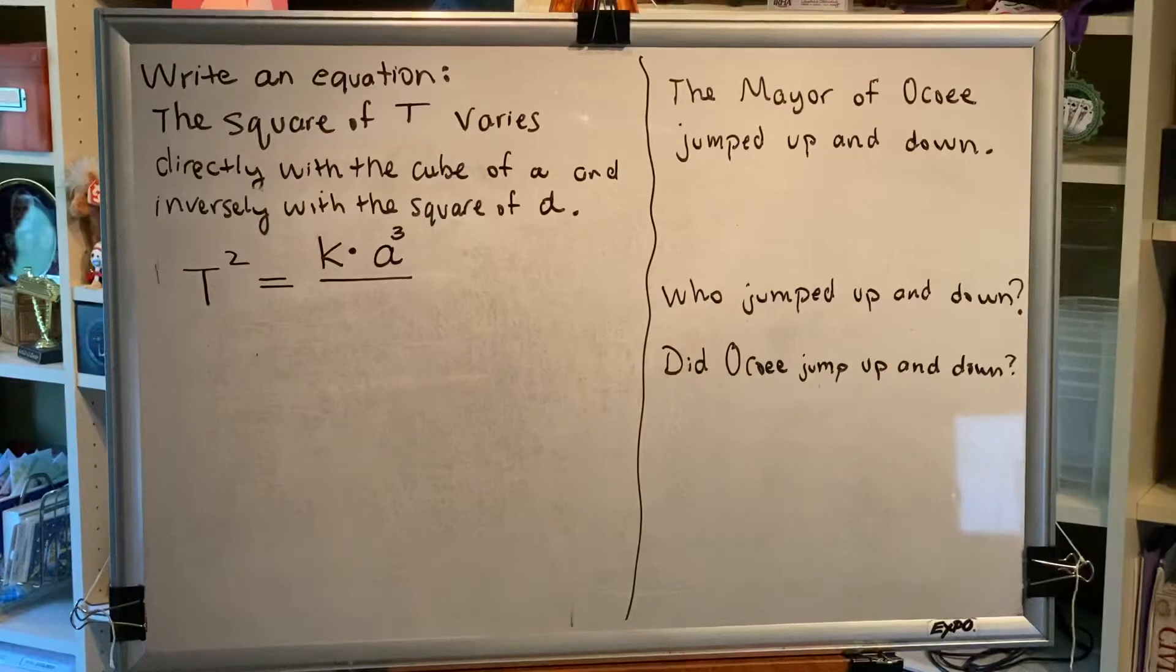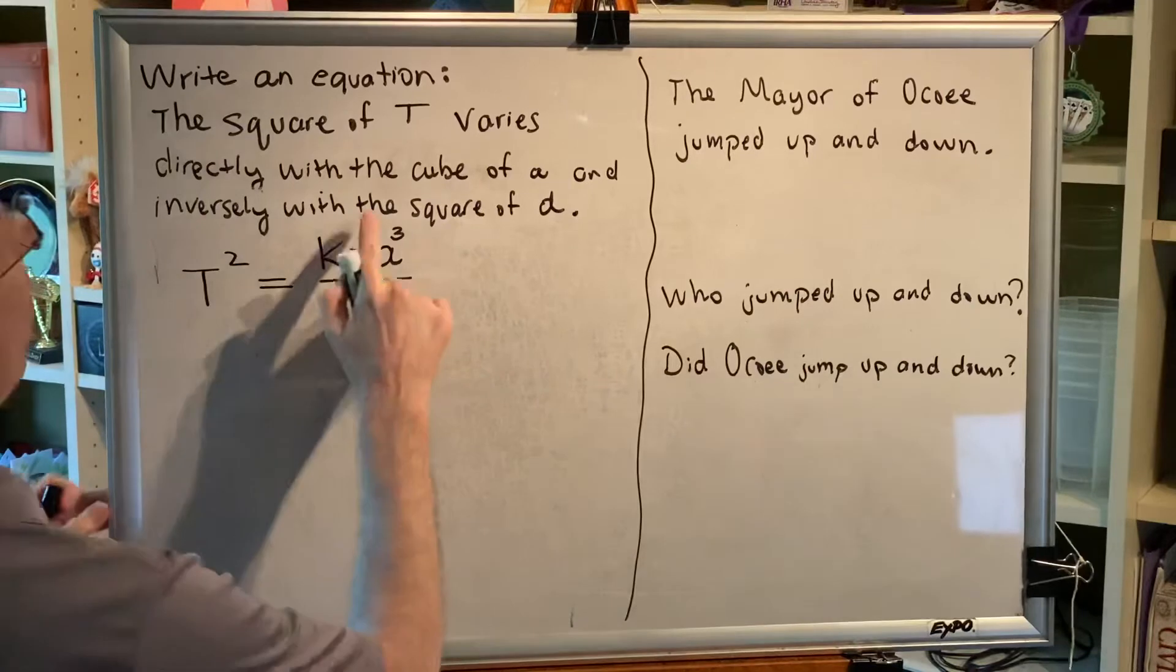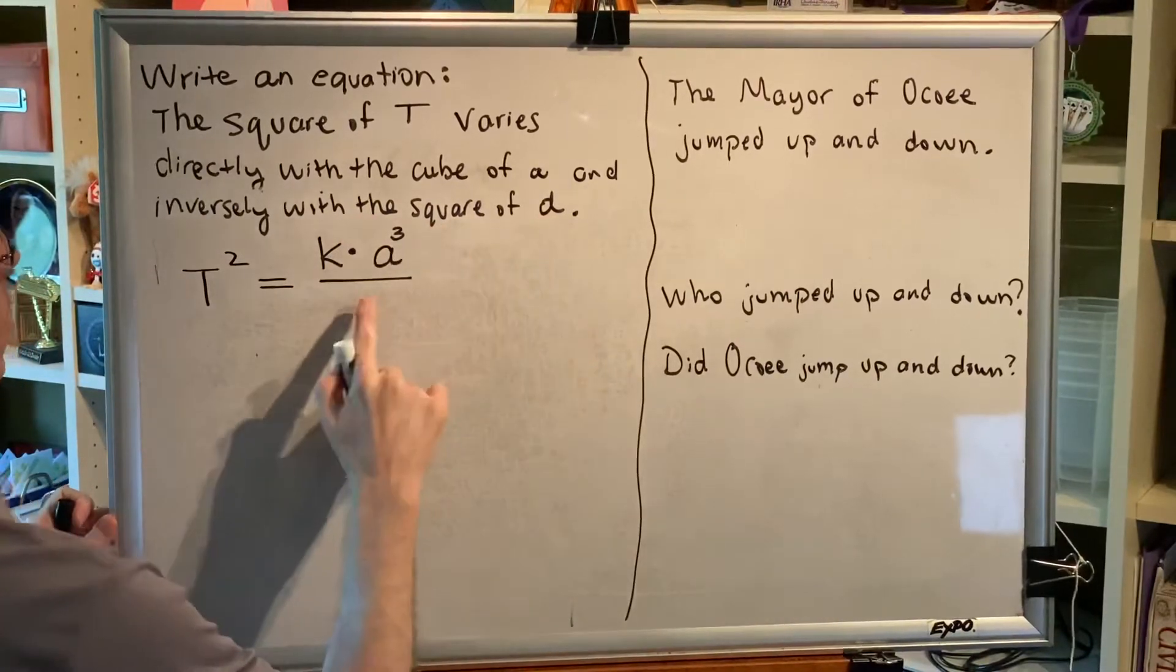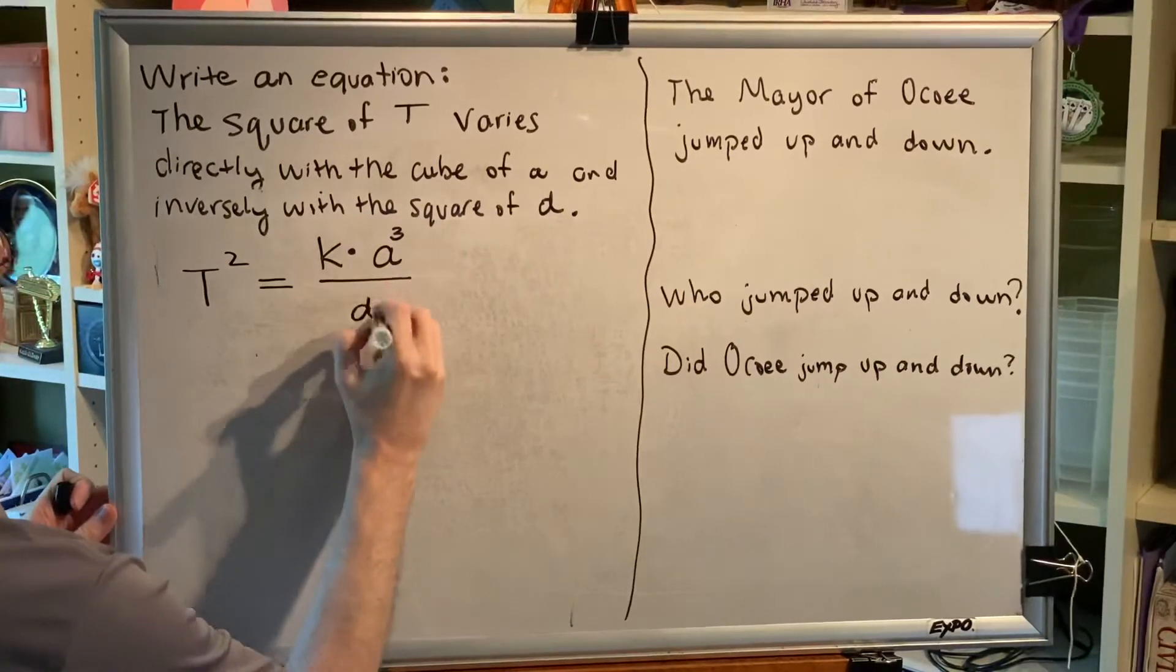If the word inversely is used, then that quantity goes in the denominator. We do have the word inversely. So, the square of d goes in the denominator. D squared.